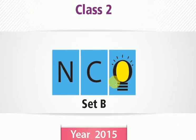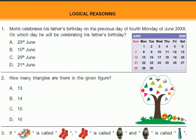This is Class 2 NCO, Set B, year 2015 question paper. It has 35 questions covering logical reasoning, mathematics, and achiever sections. In this video I will cover the first 20 questions, and in the next video I will cover questions 21 to 35.